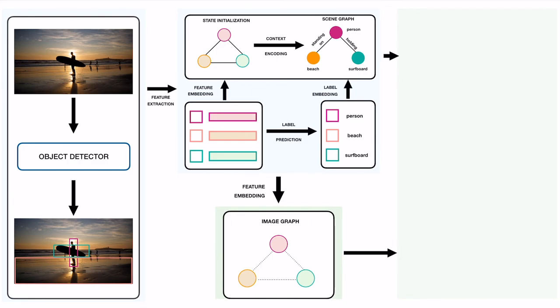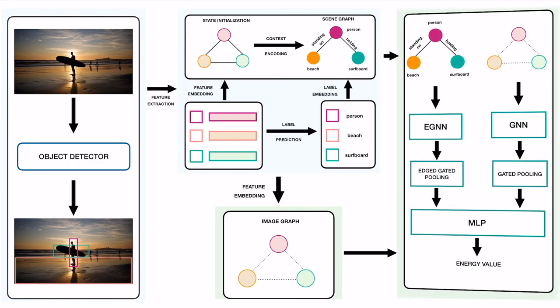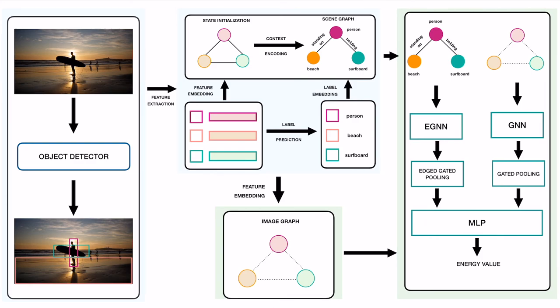one that extracts an image graph where the node states correspond to the extracted features of the objects. The second is the energy computation unit that takes as input the scene graph and the image graph to compute the energy of the joint configuration.